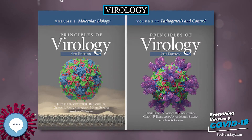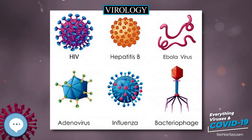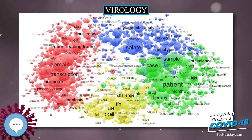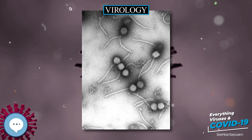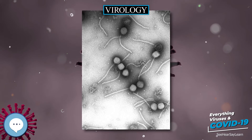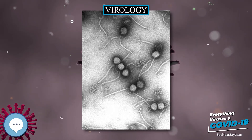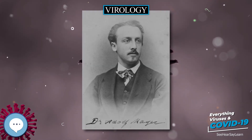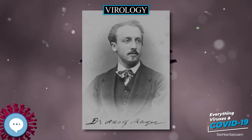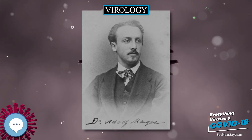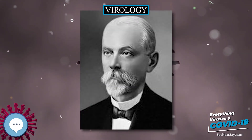Another classification uses the geometrical shape of their capsid, often a helix or an icosahedron, or the virus's structure, for example the presence or absence of a lipid envelope. Viruses range in size from about 30 nanometers to about 450 nanometers, which means that most of them cannot be seen with light microscopes. The shape and structure of viruses has been studied by electron microscopy, NMR spectroscopy, and X-ray crystallography.